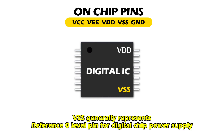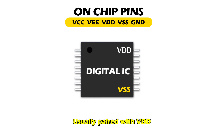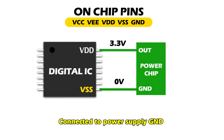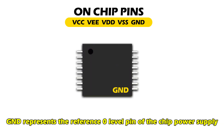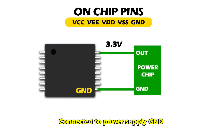VSS generally represents the reference ground level pin for digital chip power supply, usually paired with VDD, connected to power supply GND. GND represents the reference ground level pin of the chip power supply, connected to power supply GND.